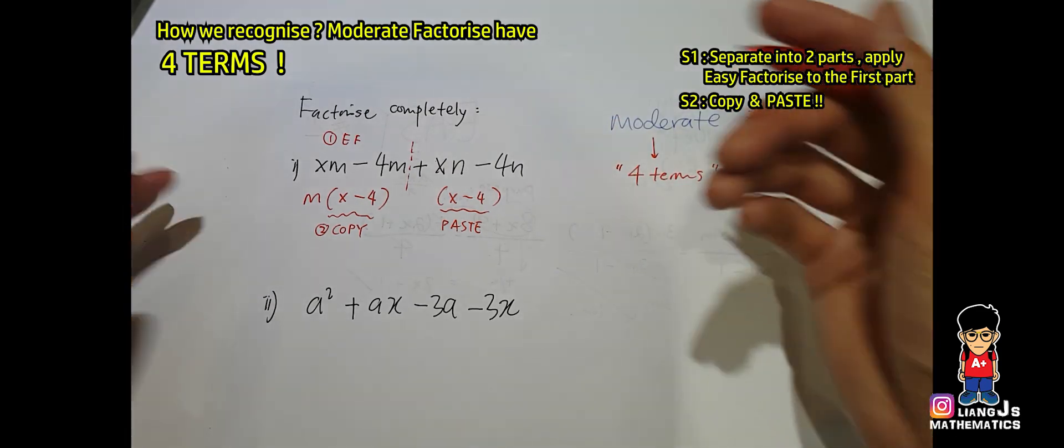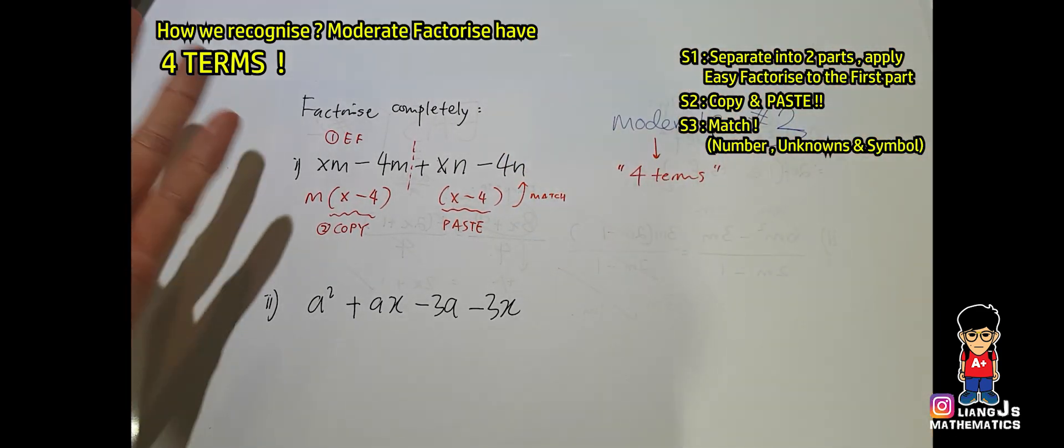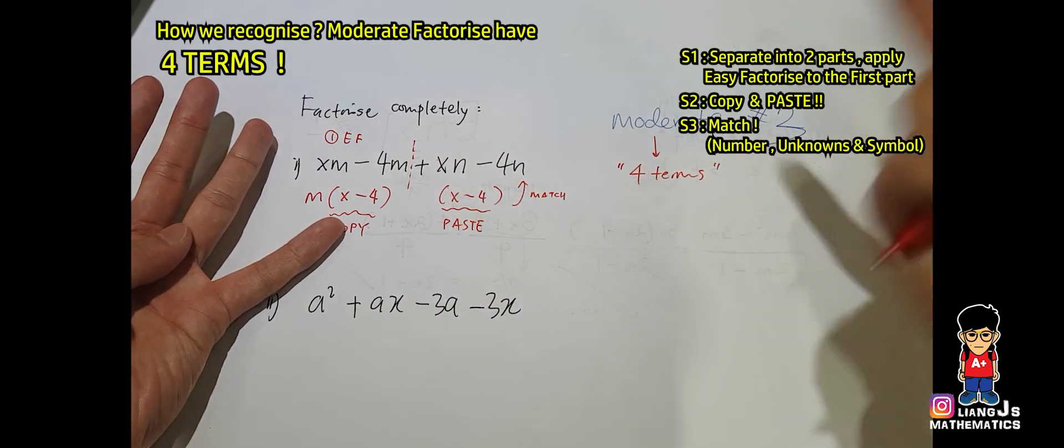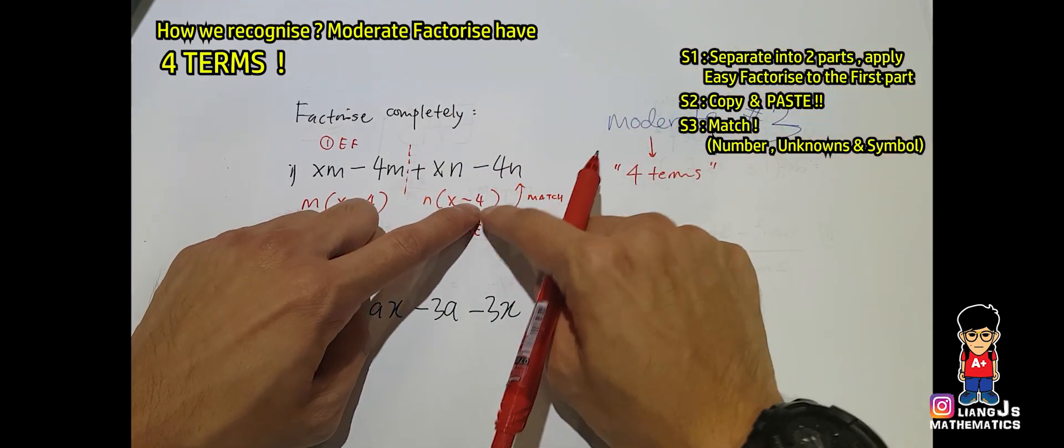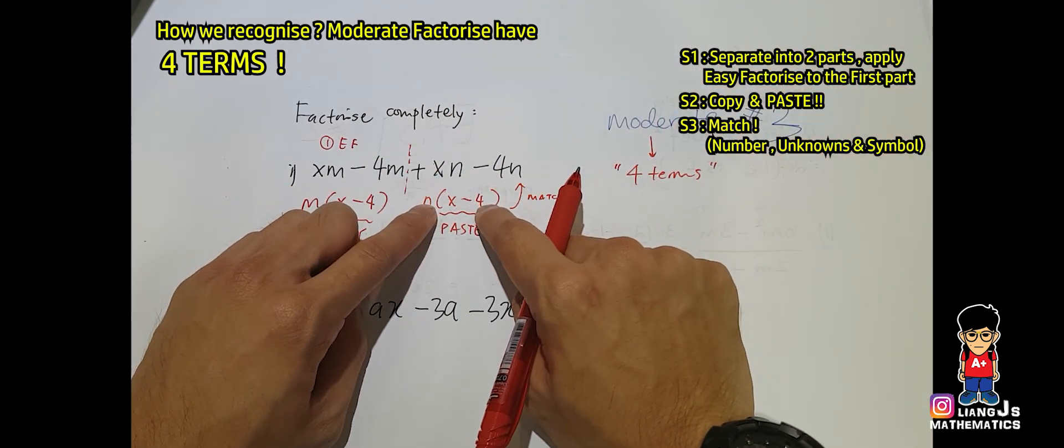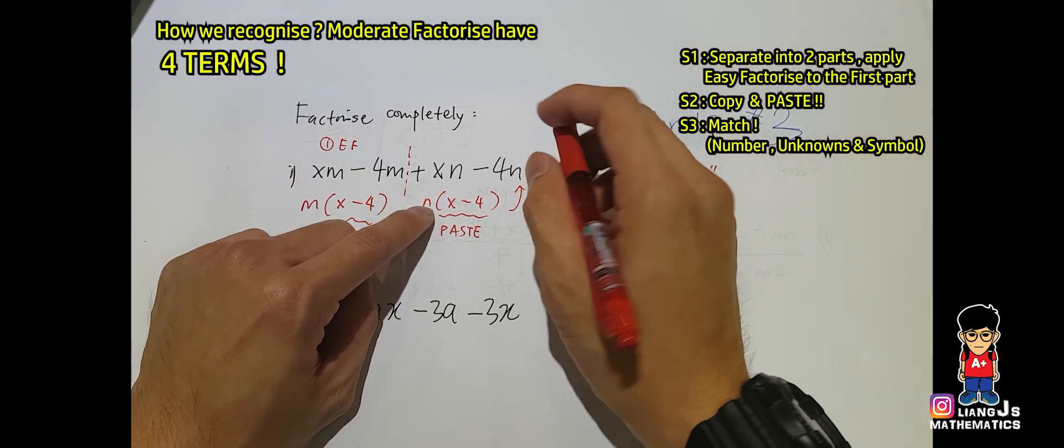And the next thing we have to do is to match. We have to match number one: the terms, and number two: the symbol. So let's match: x becomes xn, you have to put n. Right, 4 becomes 4n, you have to put n as well. So correct.